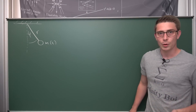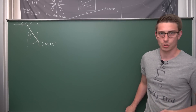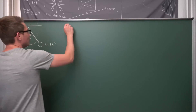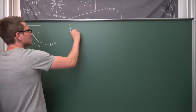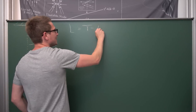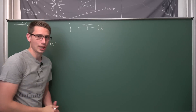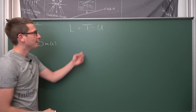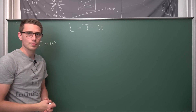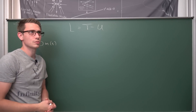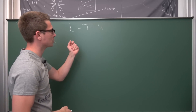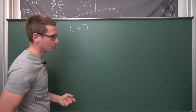Now we are going to try to find the Lagrangian of this whole thing. The Lagrangian is just the difference of the kinetic and the potential energy. We are going to find the kinetic term first because this is basically the harder part.